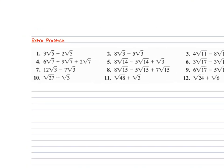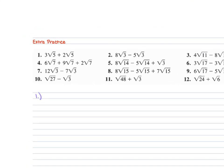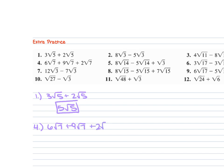For extra practice, problem 1: 3 square root of 5 plus 2 square root of 5. Like terms, so 3 plus 2 gives 5 square root of 5. Problem 4: 6 square root of 7 plus 9 square root of 7 plus 2 square root of 7. 6 plus 9 is 15, plus 2 is 17 square root of 7.